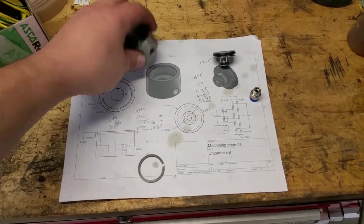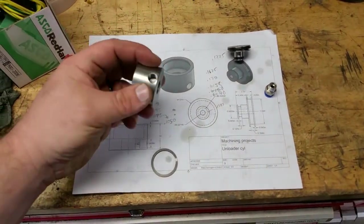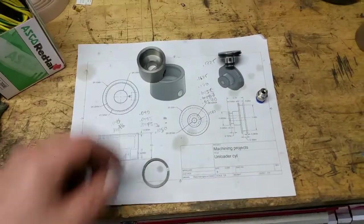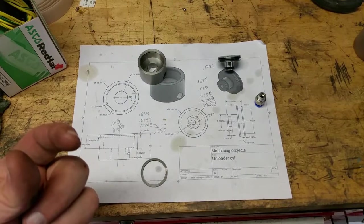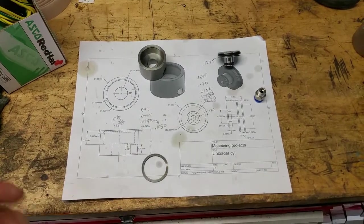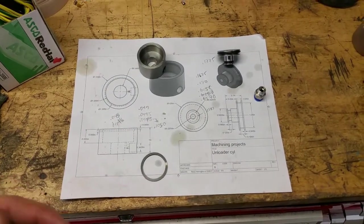So what I did is I made this coaxial air cylinder that's going to screw on the end of the threaded shaft that sticks out of the unloader. I'll show you that in the next video.